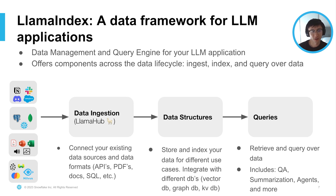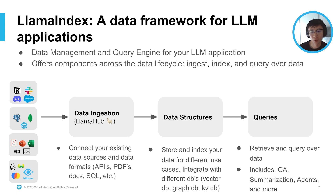You load all this data into a document format. We offer a lot of loaders on what we call Llama Hub, which contains over 150 data loaders to connect your data into a centralized document format. From there, you can run a bunch of transformations through the ingestion pipeline and integrate that with our downstream storage solutions like a vector database, graph database, or SQL database. Once your data is transformed, embedded, and stored, you can then run queries on top of it.